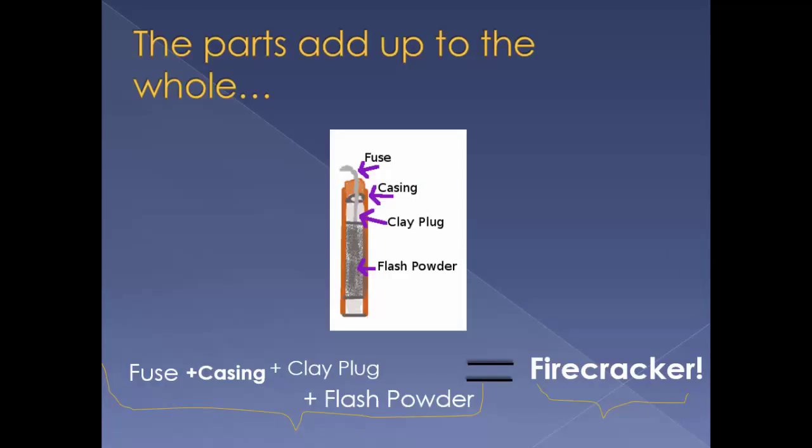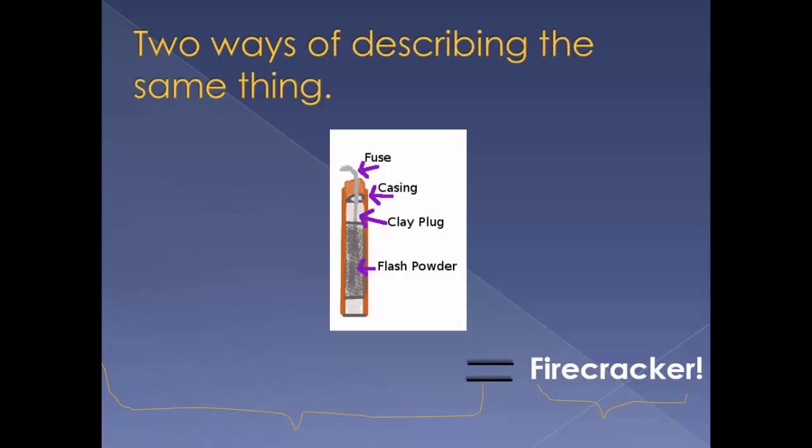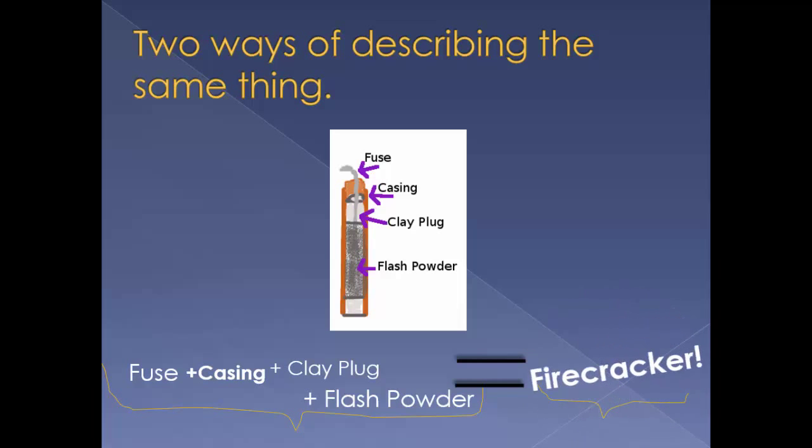Fuse plus casing plus clay plug plus flash powder add up to a firecracker. It's two ways of describing exactly the same thing. The equal sign separates them. On one side we've got fuse plus the casing plus the clay plug plus the flash powder. On the other side of the equal sign, the one word that's the whole thing all put together: the firecracker.